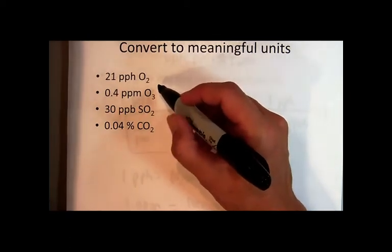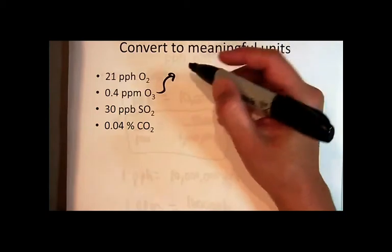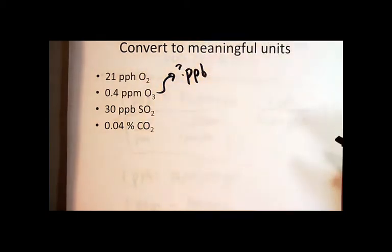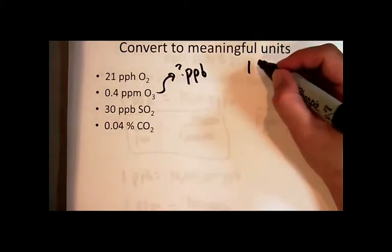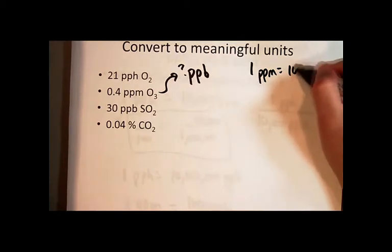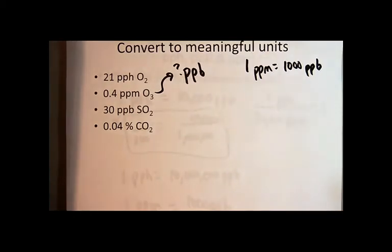Okay, so how can I convert 0.4 parts per million to units of parts per billion? I can remember the definition, or the equality: one part per million is the same as 1,000 parts per billion. Because one over a million equals a thousand over a billion.